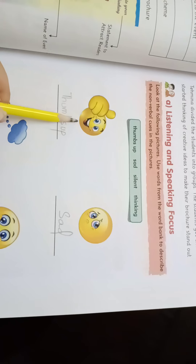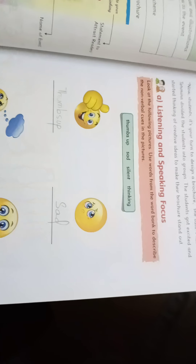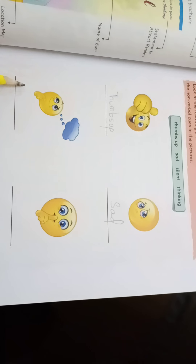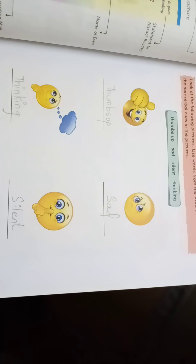From the first picture's expression, what do you identify? It is 'thumbs up.' From the second picture, the expression tells us it is 'sad.' The third picture's expression tells us it is 'thinking,' and the fourth picture is 'silent.' These are the non-verbal cues — things not spoken but identified through expression.